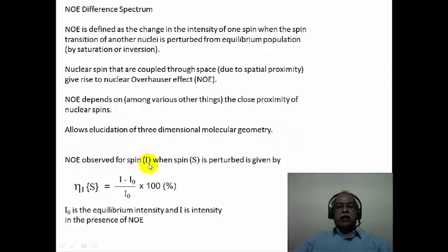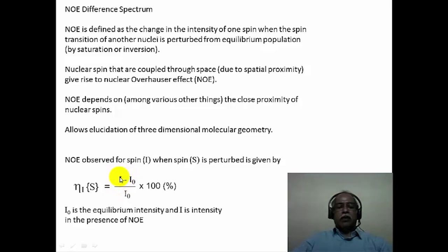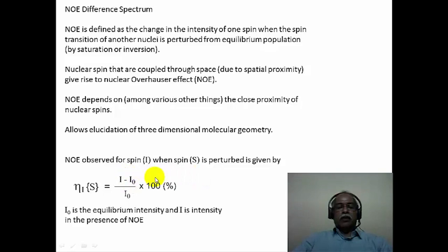The nuclear Overhauser effect observed for a spin i, when spin s is perturbed, is given by this expression. Eta(i) is the NOE when spin i is observed and spin s is saturated. This would essentially be the difference between the intensity of the signal in the absence and in the presence of NOE. I is the intensity in the presence of NOE and I₀ is the original intensity in the absence of NOE, divided by I₀ times 100, giving the percentage NOE. Therefore, it is necessary to measure the spectrum under NOE conditions as well as in the absence of NOE.